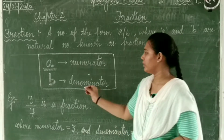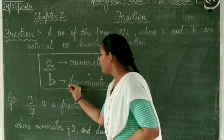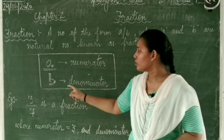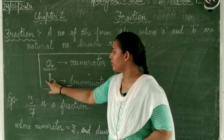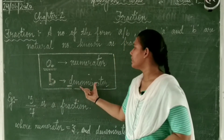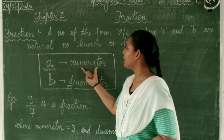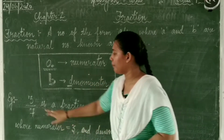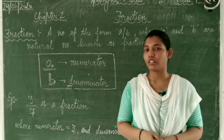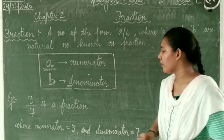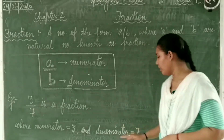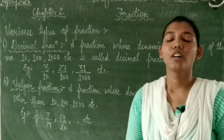We can also learn it by a trick. D stands for down, so the term which is noted down is the denominator, and the upper one is the numerator. For example, 3 upon 7 is a fraction, and in this fraction 3 is the numerator and 7 is the denominator.